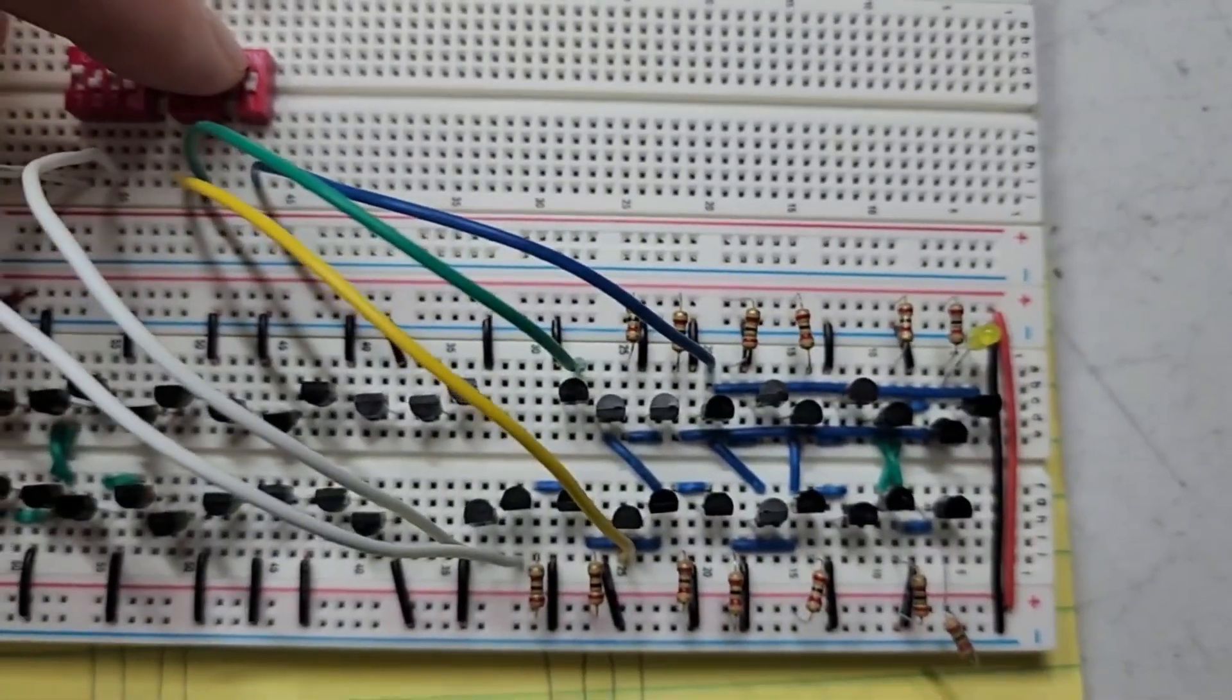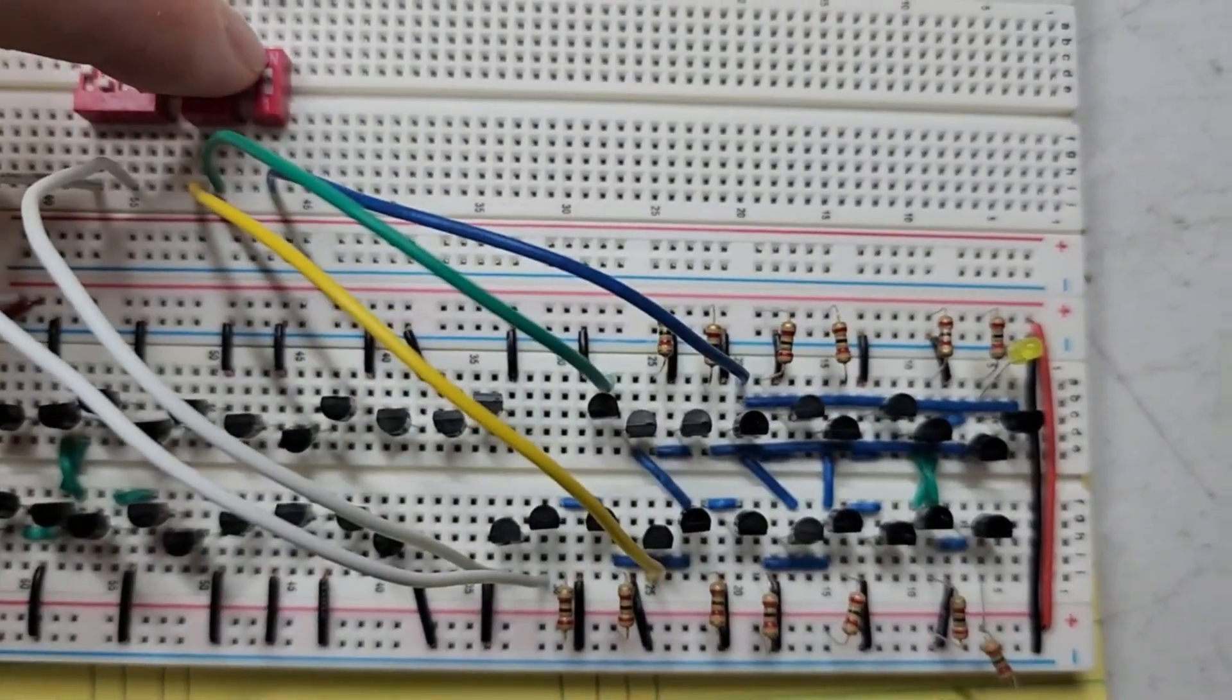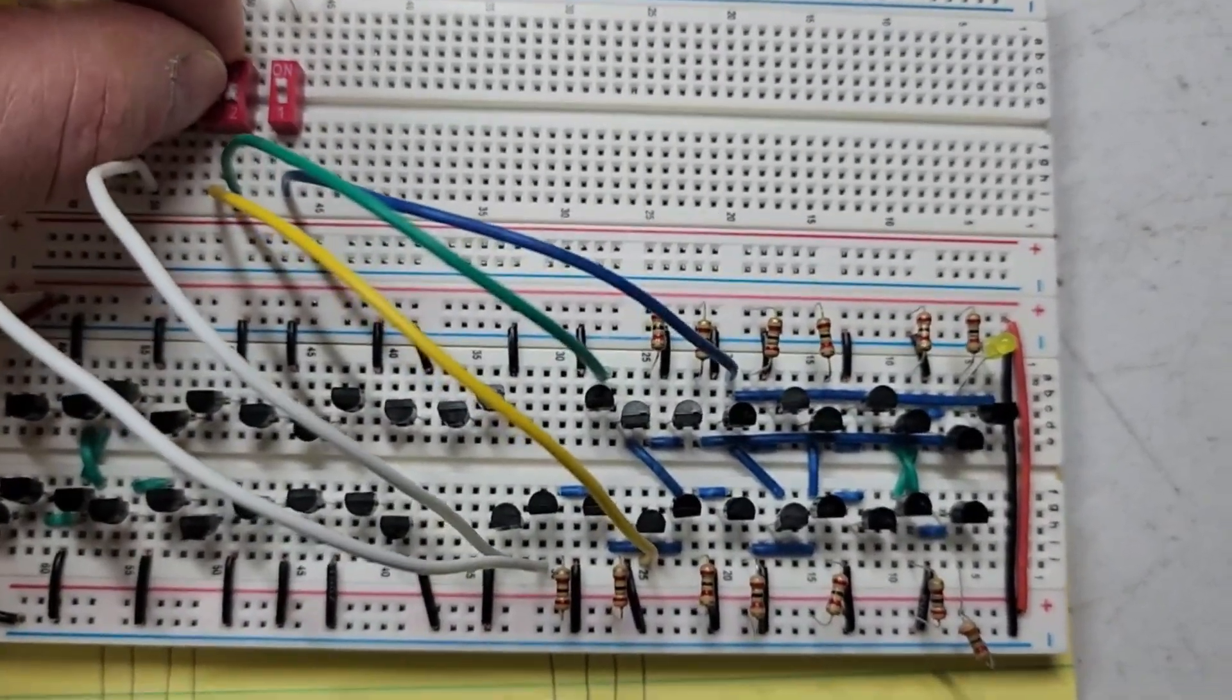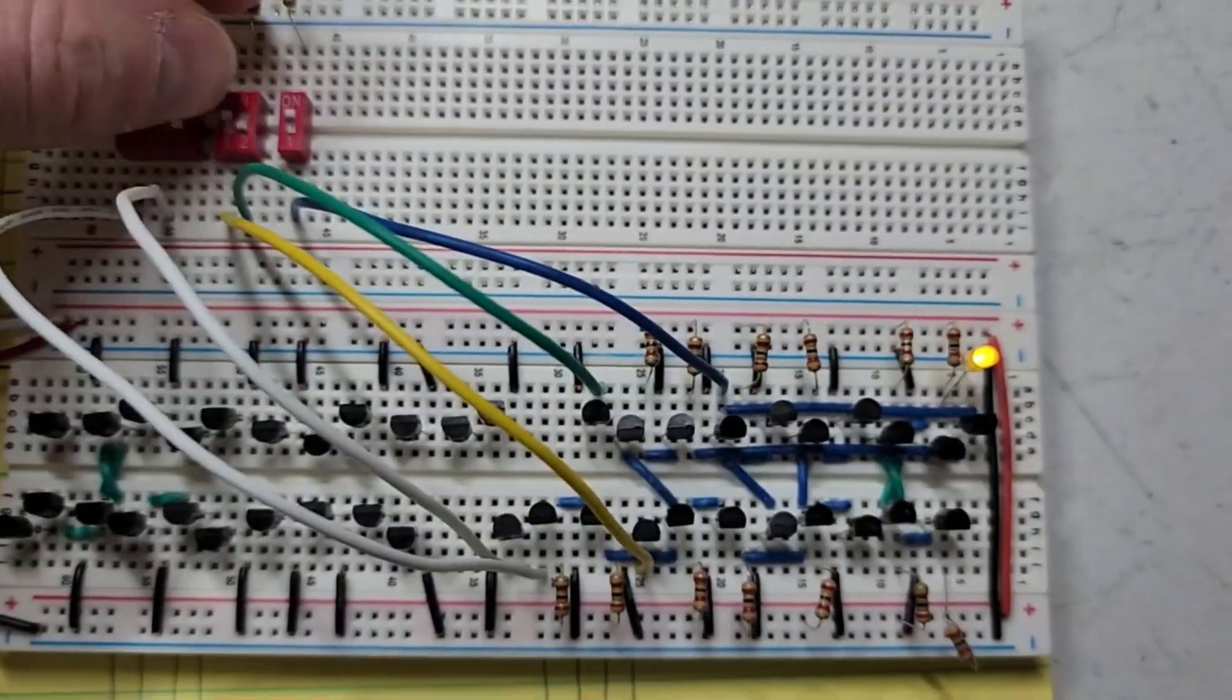So right now I have a zero. So if I want to write a one, I turn my data to one. No output yet. And now I want to write that one. See, I just pushed it up long enough to write the bit.